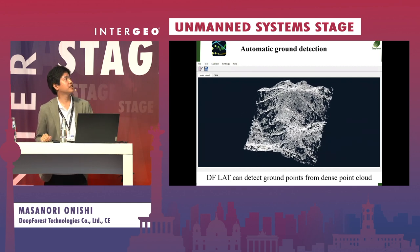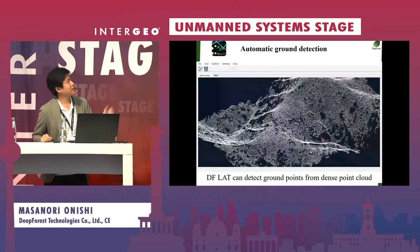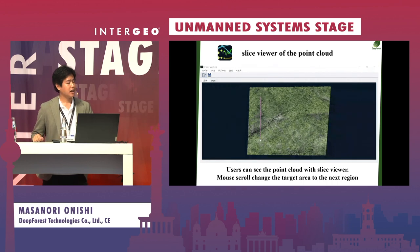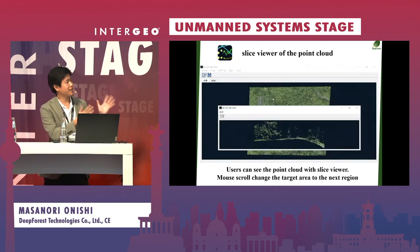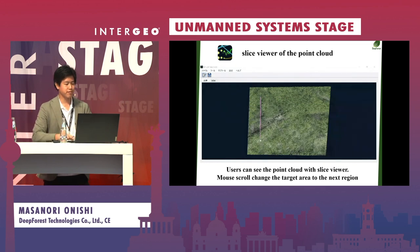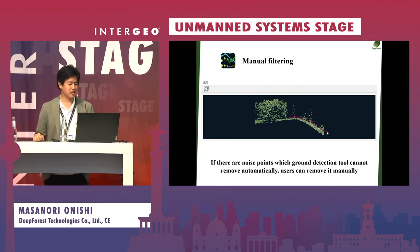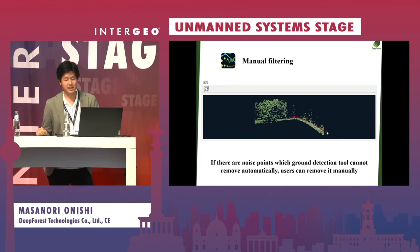DF-RAT can automatically detect ground points from the dense point cloud. DF-RAT also has a slice viewer of the point cloud, so users can view the point cloud in slices — mouse scroll changes the target area to the next region. DF-RAT also has a manual filtering method: if there are noise points that the automatic ground detection cannot remove, users can remove them manually, very easily.